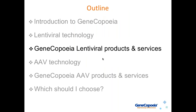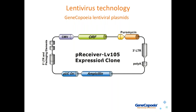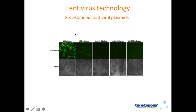Now let's talk about GeneCopia's lentiviral products and services. Here is an example of a GeneCopia lentiviral plasmid used for ORF expression, though we also have lentiviral plasmids for other inserts such as shRNAs or CRISPR sgRNAs. It contains the packaging elements including the 5' and 3' LTRs. When expressed in a packaging system, it creates infectious virus. Here you can see HT1080 cells that have been infected with Lentifect lentiviral particles at different dilutions, demonstrating very sensitive detection of GFP signal in these cells.